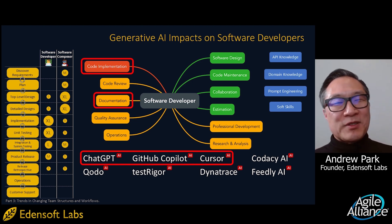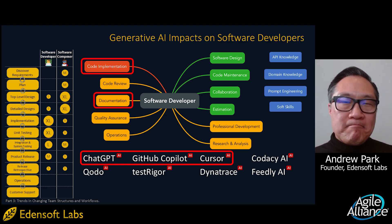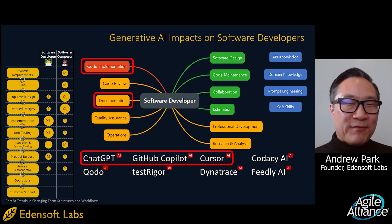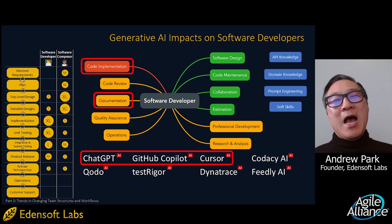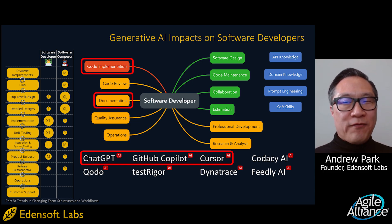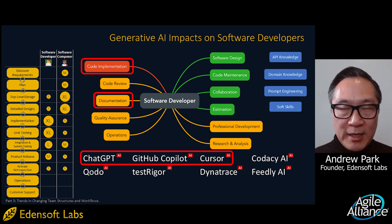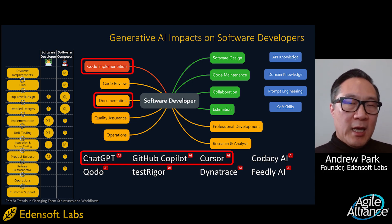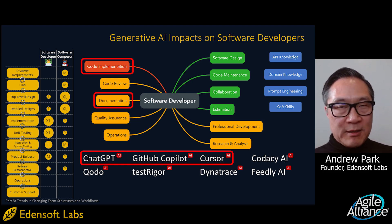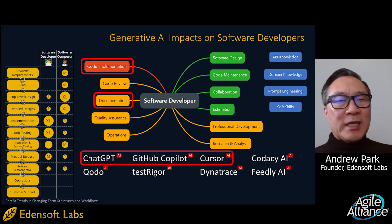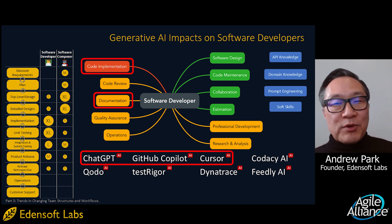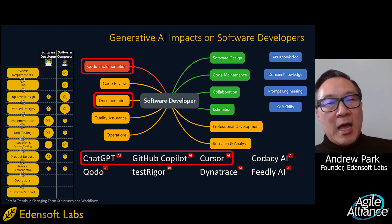ChatGPT is less suited for direct in-editor coding support. Sadly, none of these tools excel at generating documentation that effectively conveys the coder's intent — that's the bad news. With AI enabling developers to produce code far more rapidly, the volume of code generated can create a significantly greater maintenance burden for human developers. AI tools can't fully compensate for this increased complexity because they lack a true understanding of long-term design principles and architectural consistency.